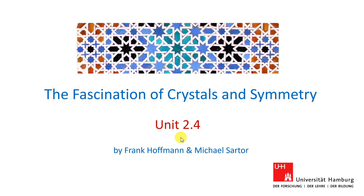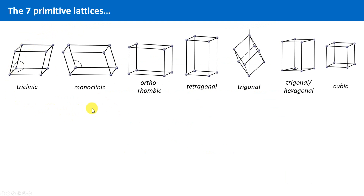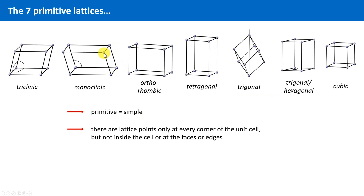In this and the next unit we will learn what the so-called Bravais lattices are all about. We already learned that there are seven crystal systems, and they are related to the seven so-called primitive lattices. Here the seven primitive lattices are shown. They are called primitive because they are indeed simple — the lattice points are only at every corner, but not inside the unit cell or at edges or faces.